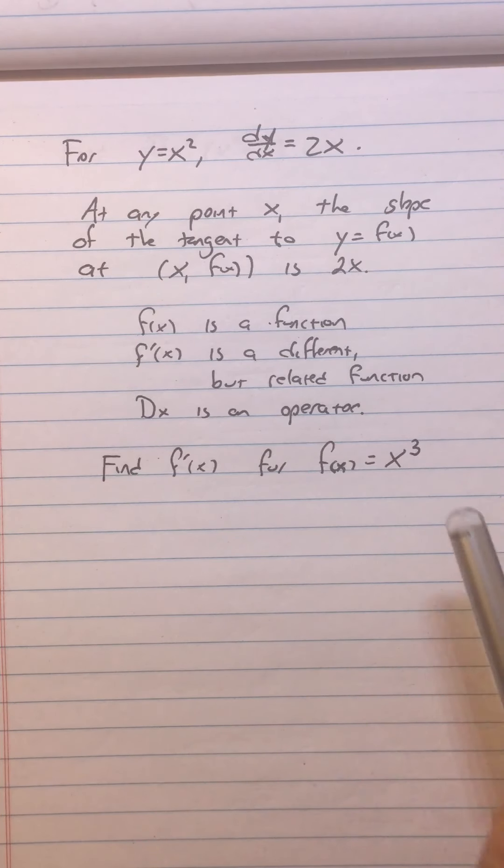Alright, so did you do the derivative of x cubed? Did you get 3x squared? If you got 3x squared, then you got it right.